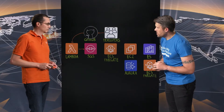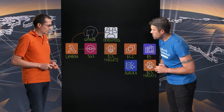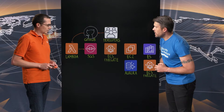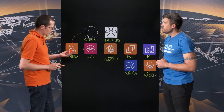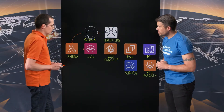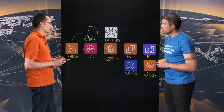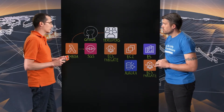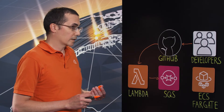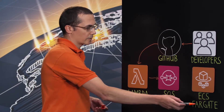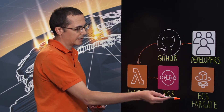Why do you have SQS there? Could you not speak directly to Fargate or even have Fargate picking up the message from GitHub? We have many reasons to use SQS. The first reason is to level the load — we don't want to overwhelm the Fargate cluster or the service. And the second reason is for auto-scaling, because this Fargate cluster is using auto-scaling and it's plugged directly into this queue.